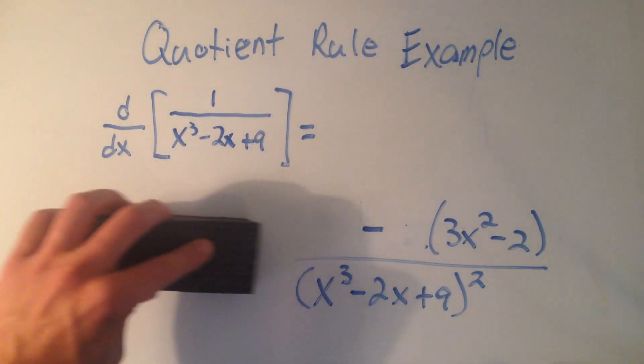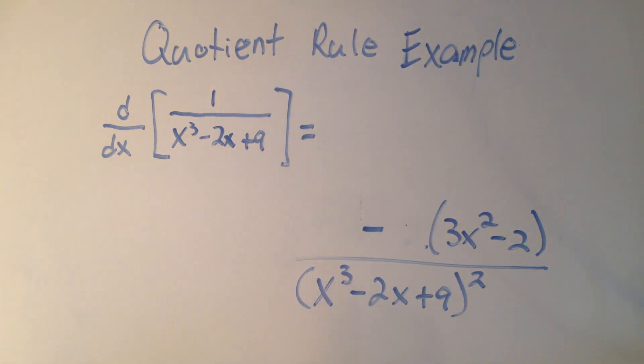So you notice something a little interesting about this, is if you watch the video on the reciprocal rule, this is exactly what you would get. You would put a minus sign here, you would put the derivative of the denominator on top, and then you would copy the denominator squared.